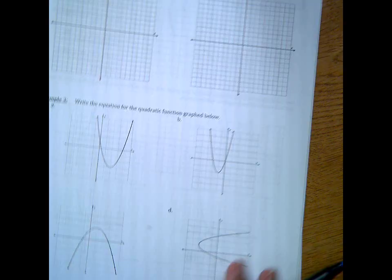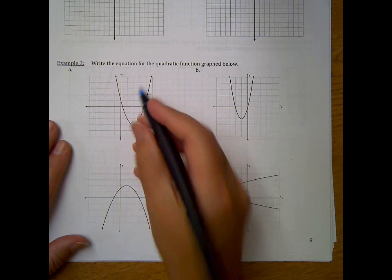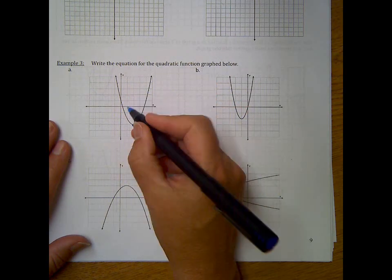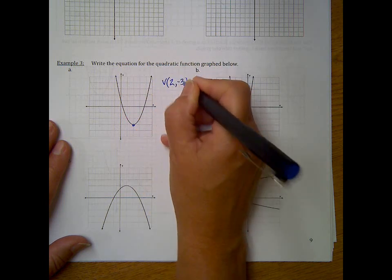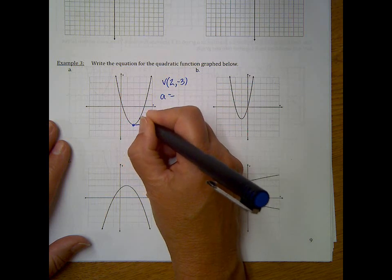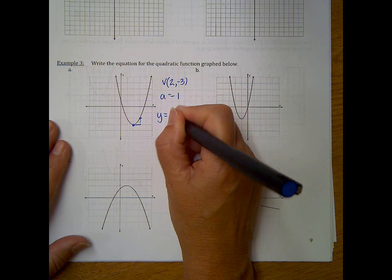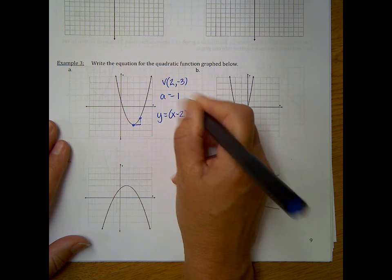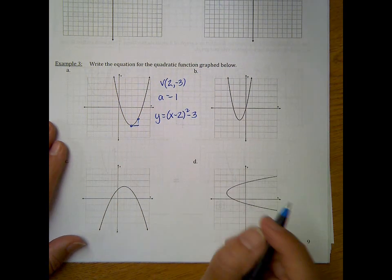Okay, so let's look at these ones at the bottom of the page, where we're going the other way around. We're going to write the equation of the graph. So here, first thing we want to find is the vertex, which looks to be 2, negative 3. And then we want to find our a value, and I can see since I'm going over 1, up 1, our a value must be 1. So I just do y equals x minus 2 squared minus 3. That one's pretty easy.